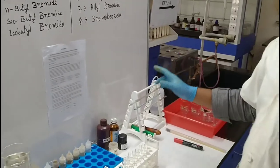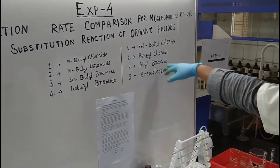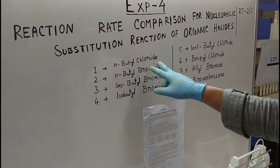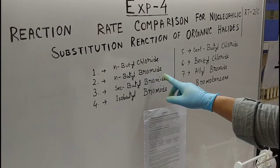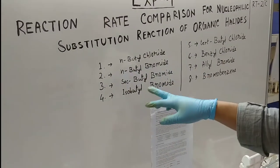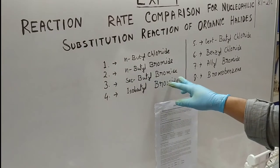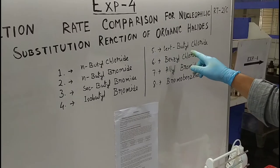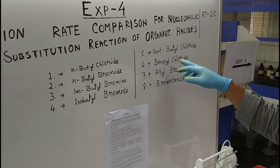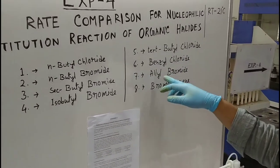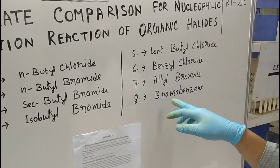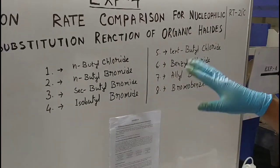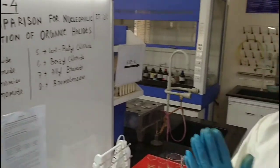You can see some halides are written over here. Number 1 is N-butyl chloride, number 2 is N-butyl bromide, 3rd is secondary butyl bromide, 4th is isobutyl bromide, 5th is tert-butyl chloride, 6th is benzyl chloride, 7th is allyl bromide, and 8th is bromobenzene. We have to perform the experiment for these halides only.